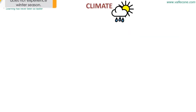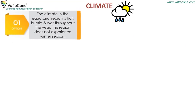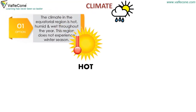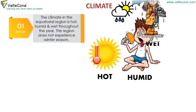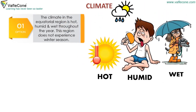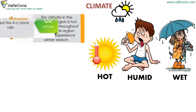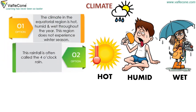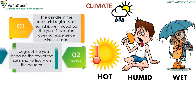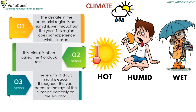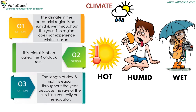The climate in the equatorial region is hot, humid and wet throughout the year. This region does not experience winter season. This rainfall is often called the 4 o'clock rain. The length of the day and night is equal throughout the year because the rays of the sun shine vertically on the equator.